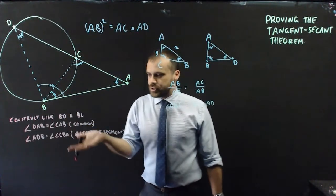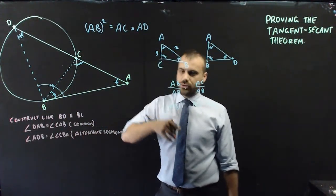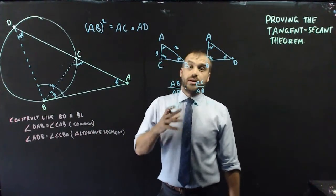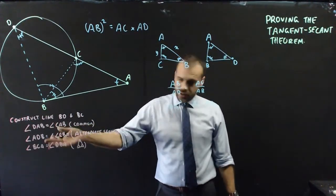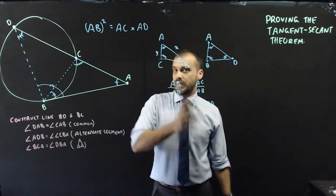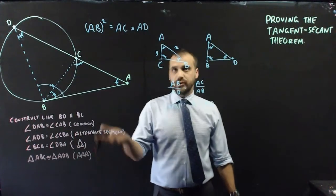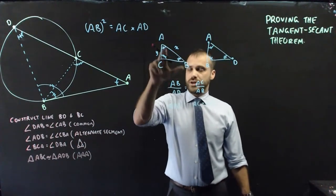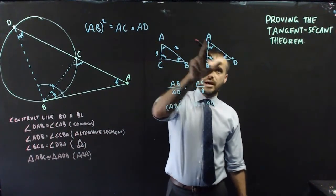After we've got two angles in common, we're going to have our third angle because angles add up to 180 degrees in a triangle. And with three angles in common, we can say that the triangles are similar because of the angle-angle-angle rule. Now be careful here—you've got to make sure that you do your sides in the right order: ABC, ADB.